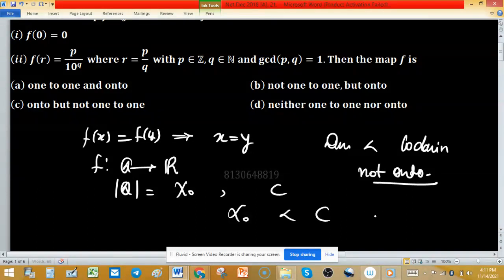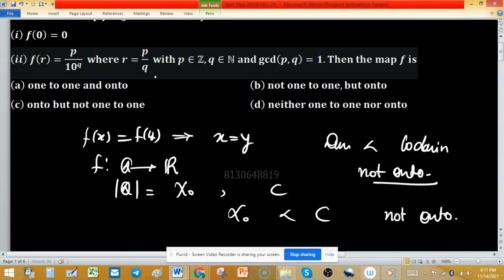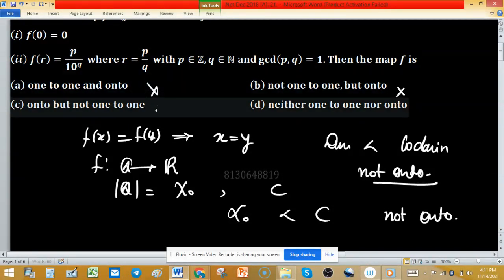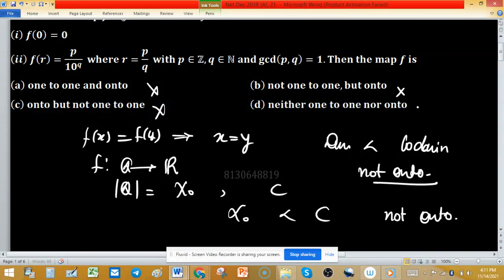So clearly we can understand cardinality of Q is strictly less than c. Then function cannot be onto. Function is not onto means option a, b, and option c discard, and remaining one is d.